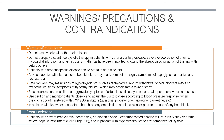Contraindications for Bystolic include patients with severe bradycardia, heart block, cardiogenic shock, decompensated cardiac failure, sick sinus syndrome, severe hepatic impairment such as Child-Pugh score greater than B, and patients with hypersensitivities to any component of Bystolic.